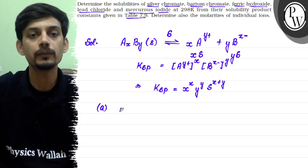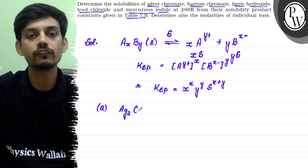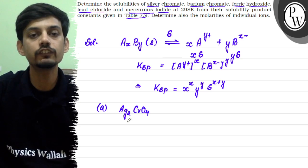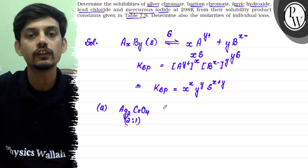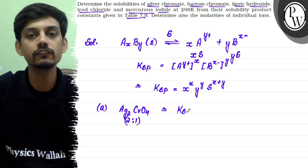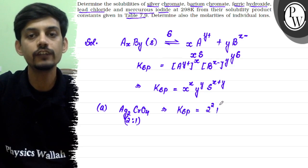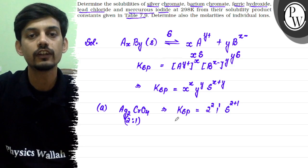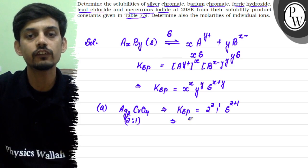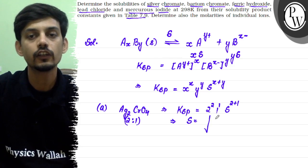The first salt is silver chromate, Ag₂CrO₄. The KSP value from the table is 1.1×10⁻¹². We write the KSP expression as: KSP = 2² × 1¹ × S^(2+1), so KSP = 4S³. The solubility S is therefore the cube root of KSP divided by 4.